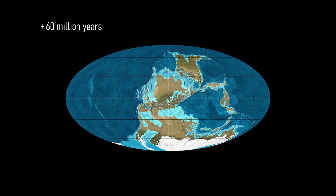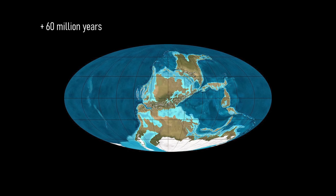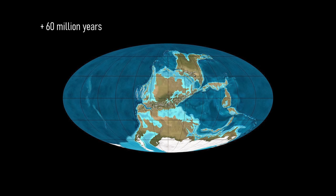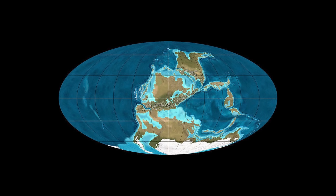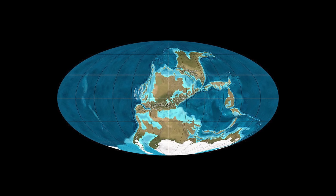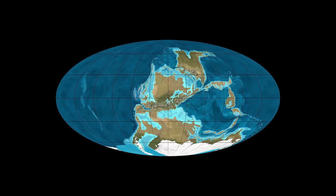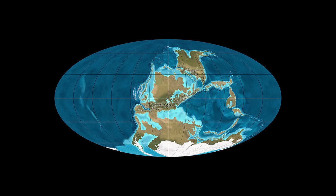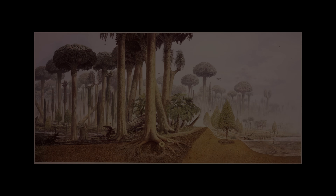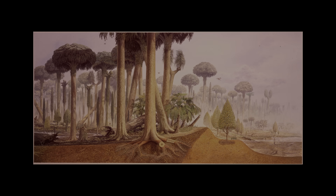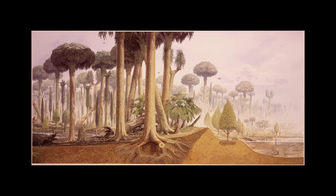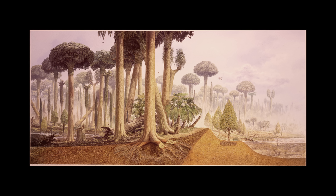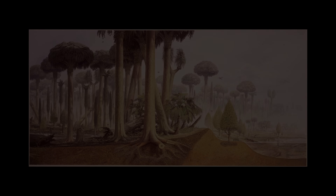Around 305 million years ago, things started to shift. The climate dried out, ice ages came and went, huge glaciers locking up water at the poles. Those endless swamps started shrinking. The lush, wet world was giving way to something harsher, drier, less forgiving.